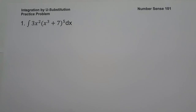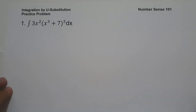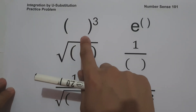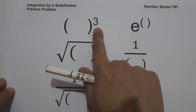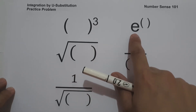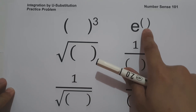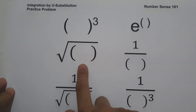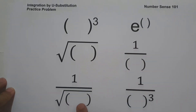Let us set a value of u that we can use to eliminate the variable x. If you have an expression raised to a certain exponent, that is always the value of u. If you have e raised to a certain exponent, the exponent will be the value of u. Whenever you have a radical sign, the radicand will be the value of u. And whenever you have a fraction raised to a certain exponent or under a square root, that is always the value of u.